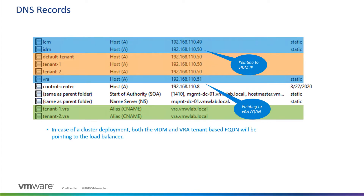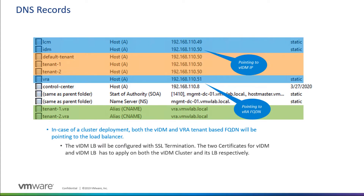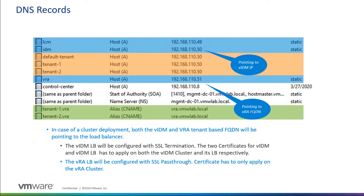In the case of a cluster deployment, both VIDM and VRA tenant-based FQDNs would point to a load balancer — one fronting the VIDM nodes and one fronting the VRA nodes. The VIDM load balancer must be configured with SSL termination, and the two VIDM certificates must be applied on both the VIDM cluster and its load balancer respectively. The VRA load balancer is configured with SSL pass-through, so the certificate only needs to apply on the VRA cluster.